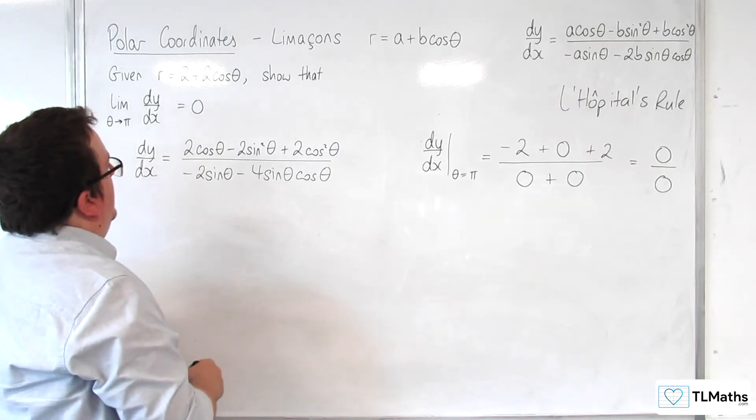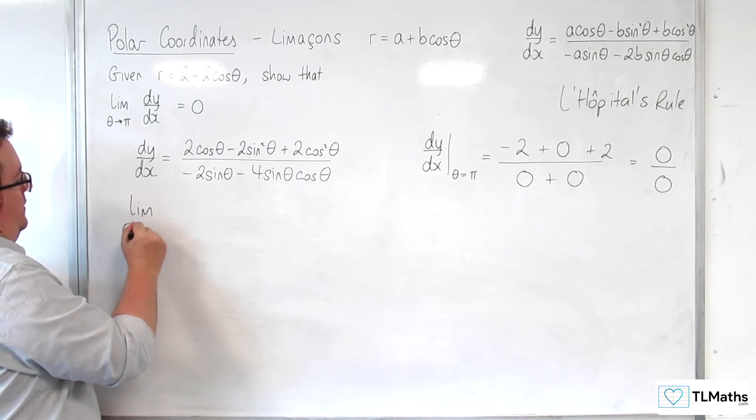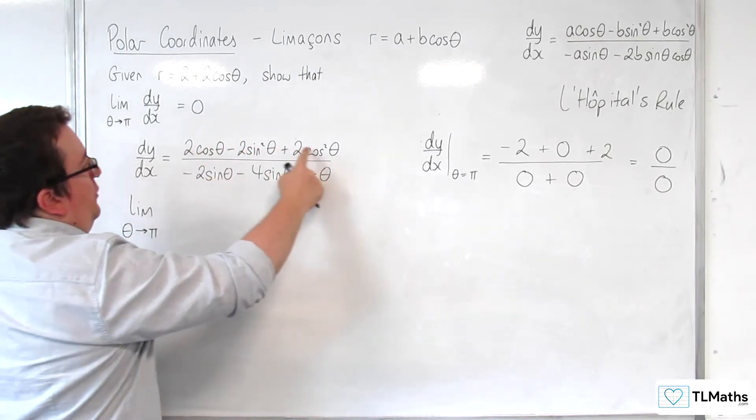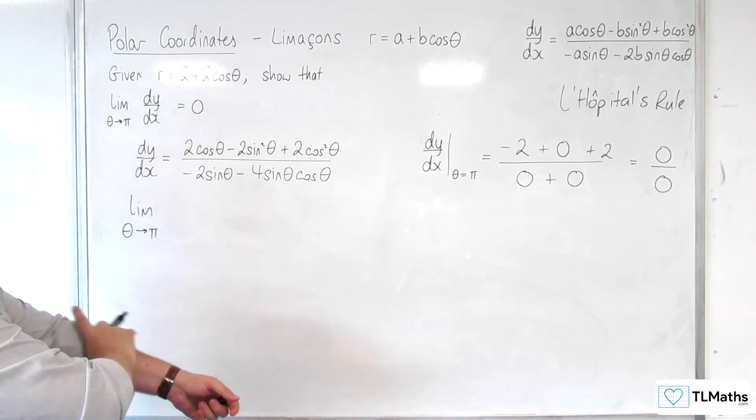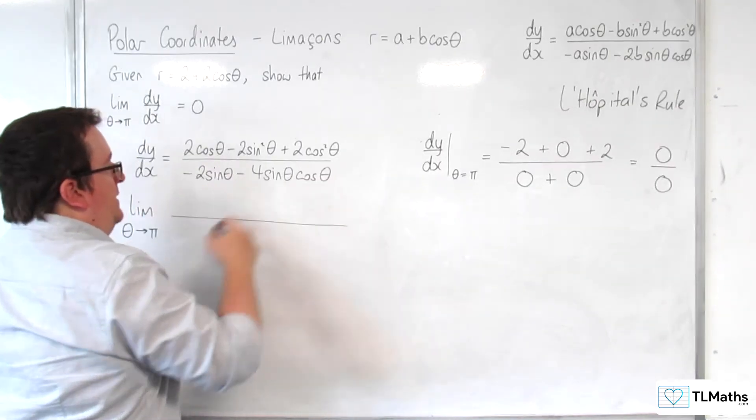So what we're going to do is we're going to find the limit as theta tends to pi of the derivative of 2 cosine theta take away 2 sine squared plus 2 cosine squared in the numerator, and the derivative of that in the denominator.